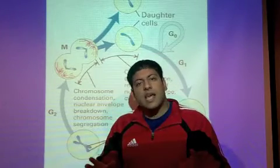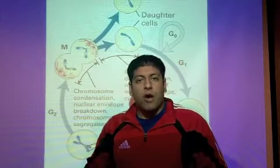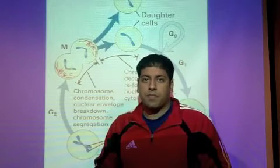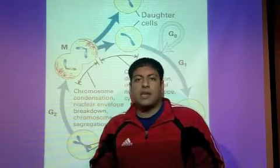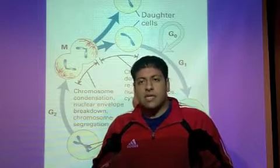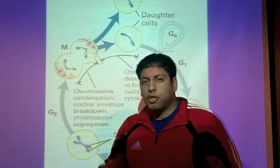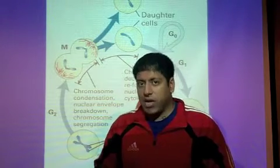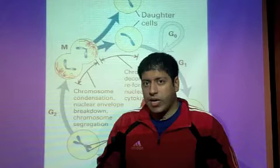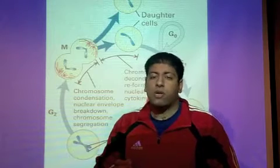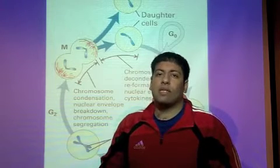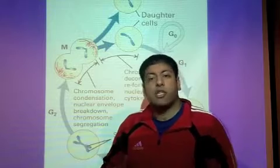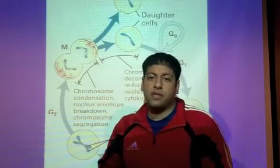To help us understand what MPF activity is and what it does to stimulate cells to go from one phase of the cell cycle to another, we're going to look at a series of experiments all done on the same model organism — the frog egg, the oocyte. These experiments showed us what MPF activity is made up of and how it stimulates the egg cell to go from G2 into M phase.